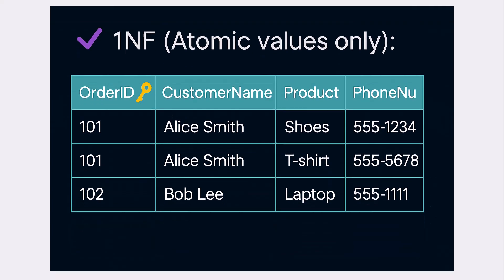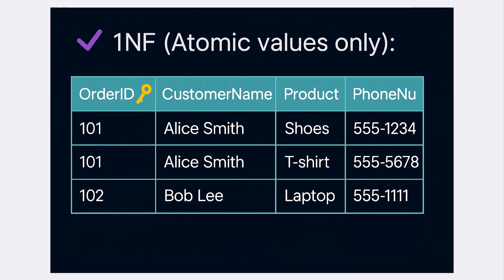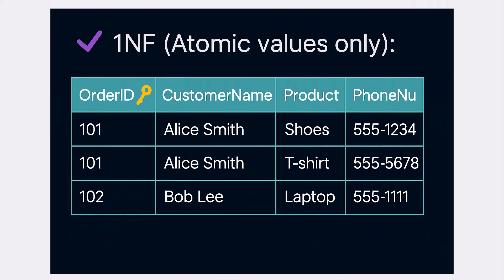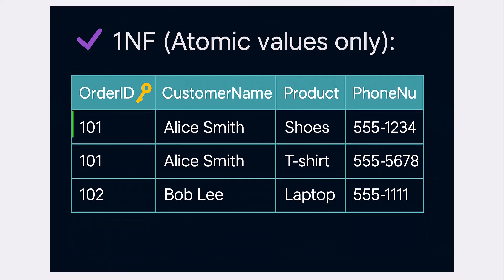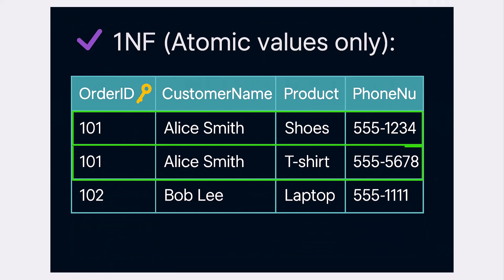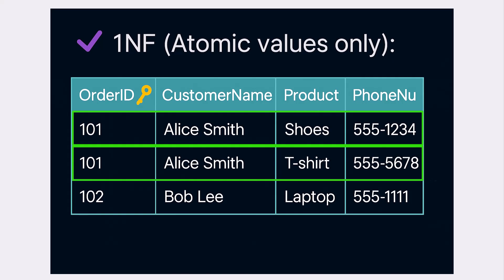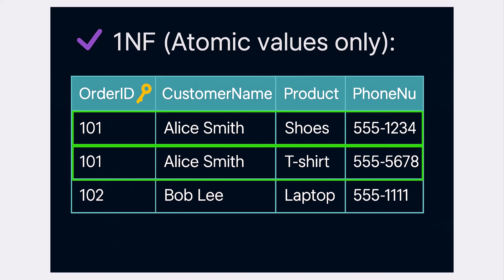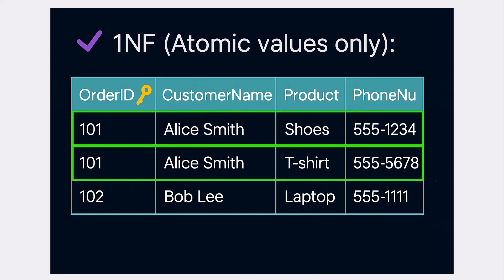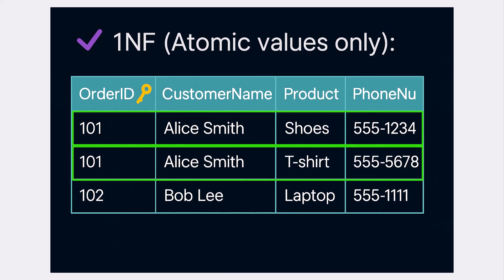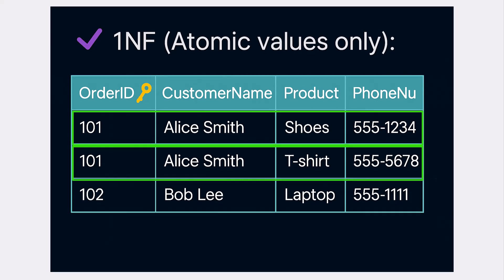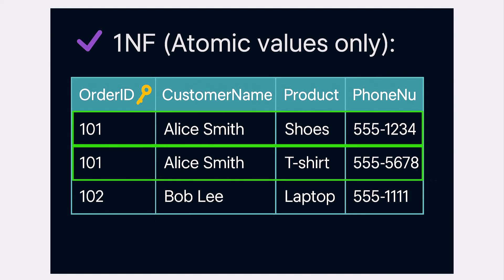The solution? Split those values into separate rows. Now, each value is atomic, and your data is in first normal form — clean, searchable, and ready for the next steps in normalization.